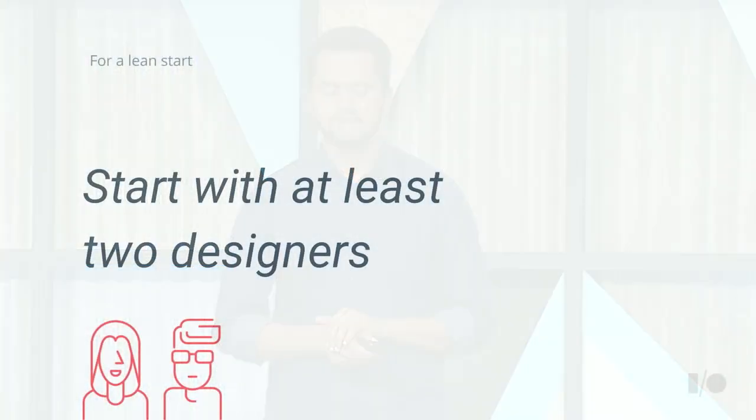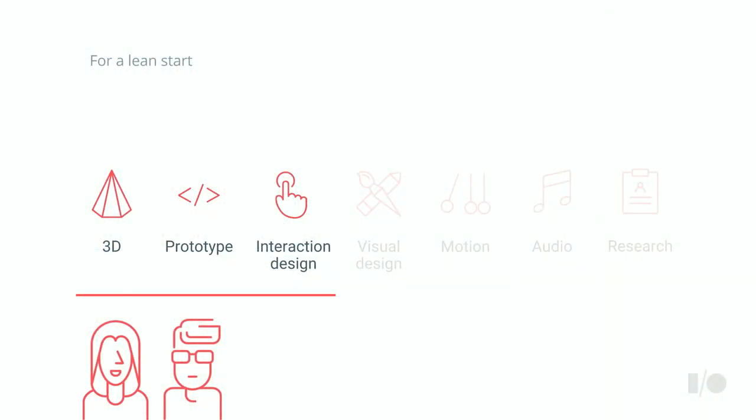If you're starting to build a new team, I suggest starting with at least two designers. This will help them collaborate, bounce ideas off each other, provide feedback, and solve problems faster when one gets stuck. Between these designers, you should have at least three skills. If you recall the process diagram Michael shared, 3D design, prototyping, and interaction design were the fundamental skills — you can't accomplish much without them. Other skills can be included at different phases of the project as the need arises.